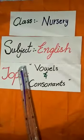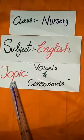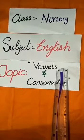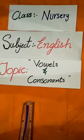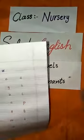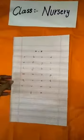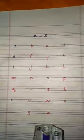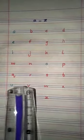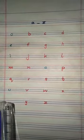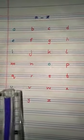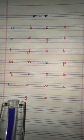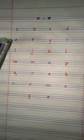Welcome students to the English class. Today I am going to teach you about vowels and consonants for nursery class. As you know, there are 26 letters in the English alphabet family. We will read it and you can also repeat after me.